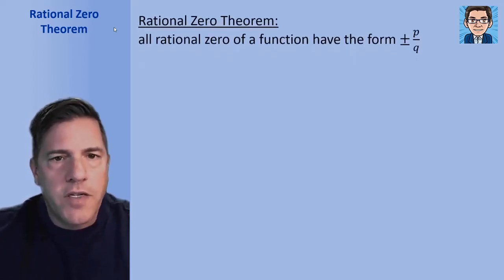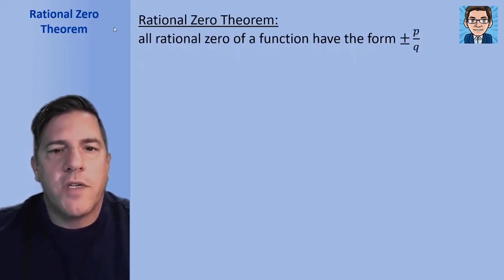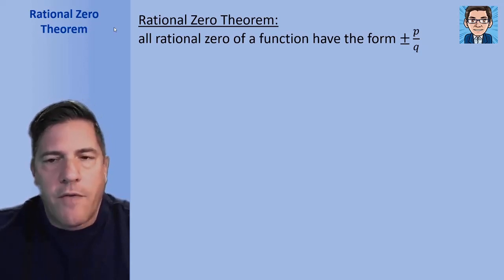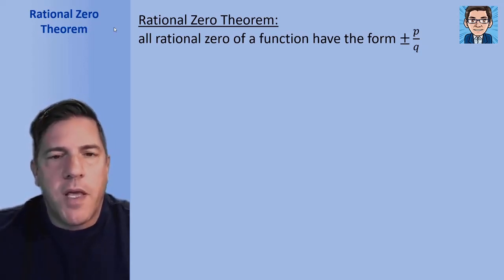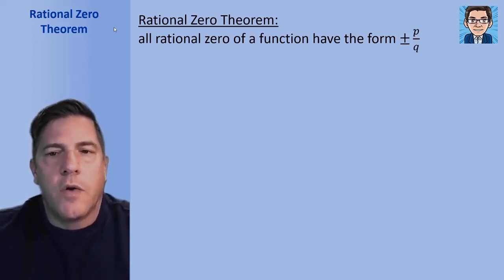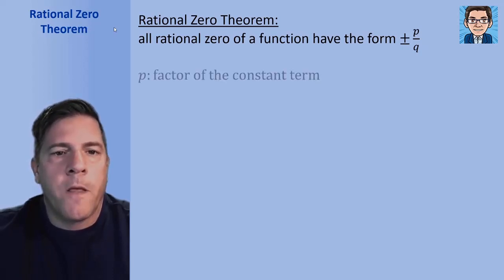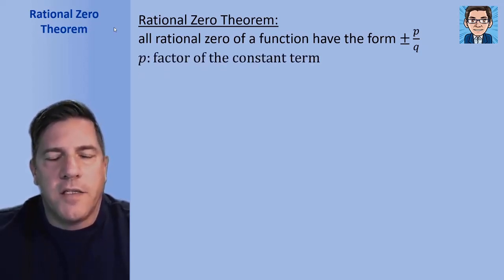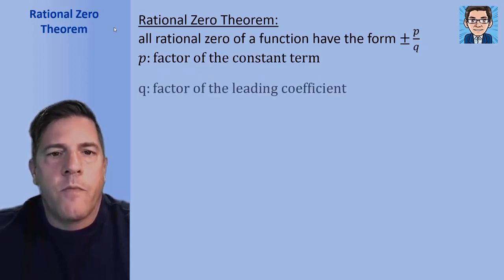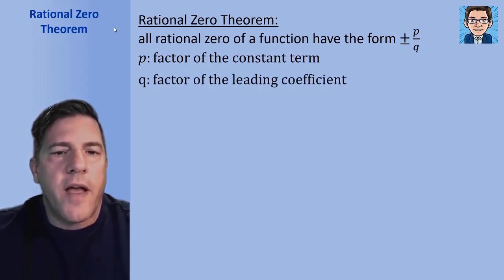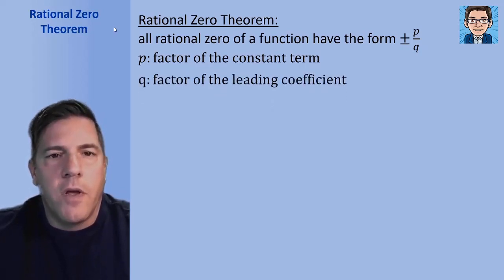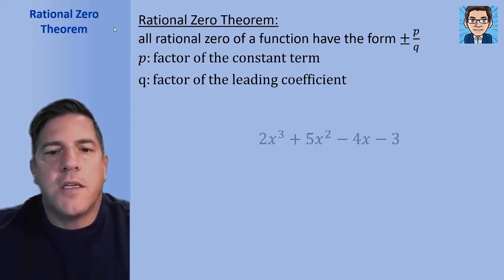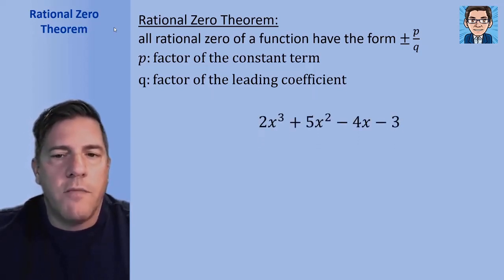The Rational Zero Theorem says that all rational zeros of a function have the form plus or minus p over q. Where p is a factor of the constant term, and q is a factor of the leading coefficient. The best way to do this is to take a look at an actual function and calculate the rational zeros for it.